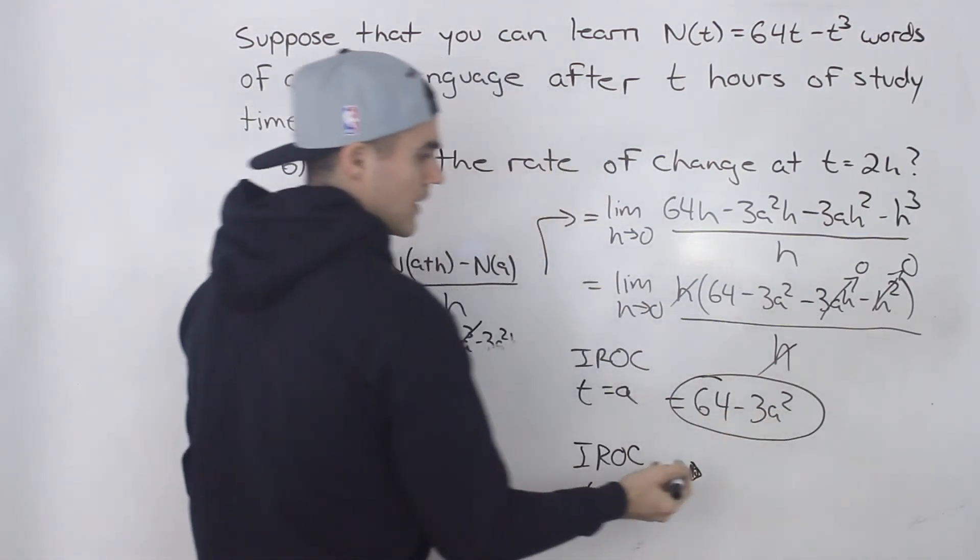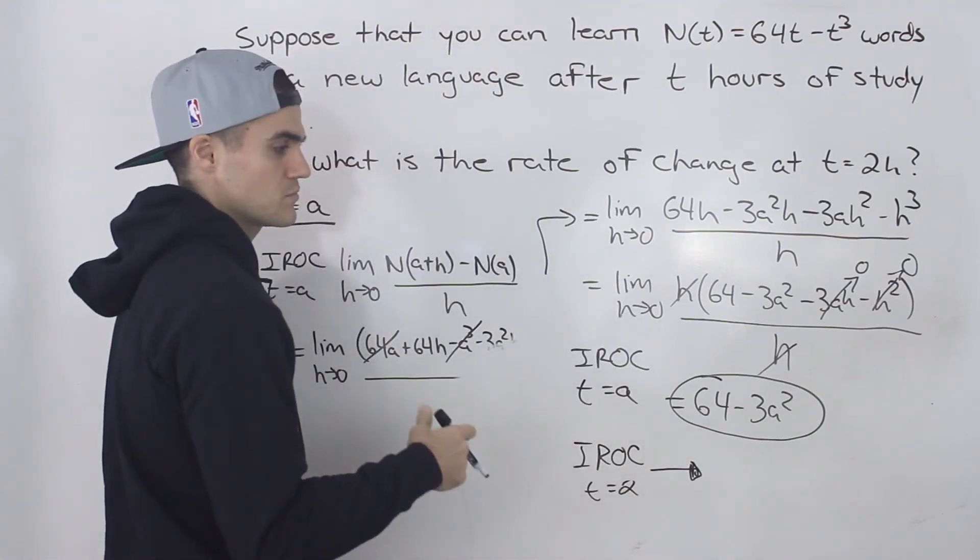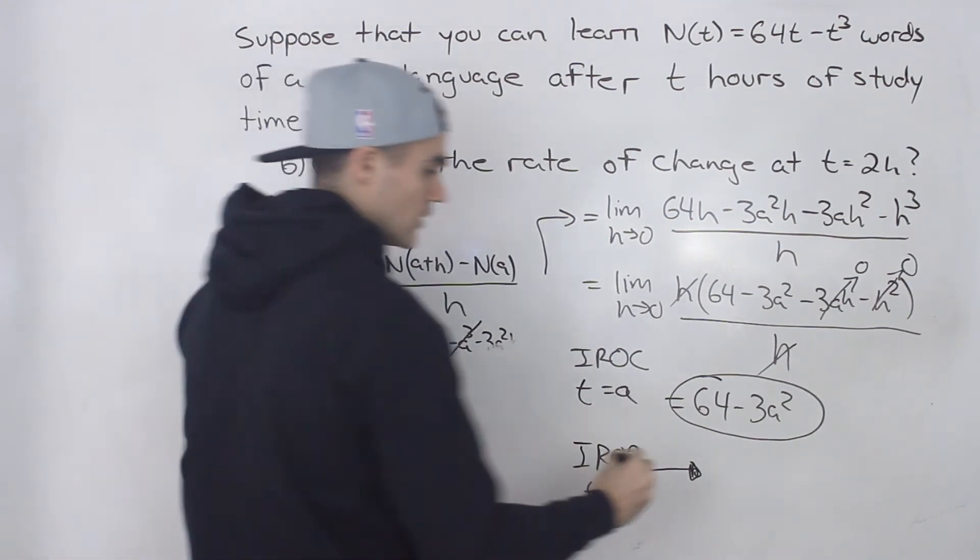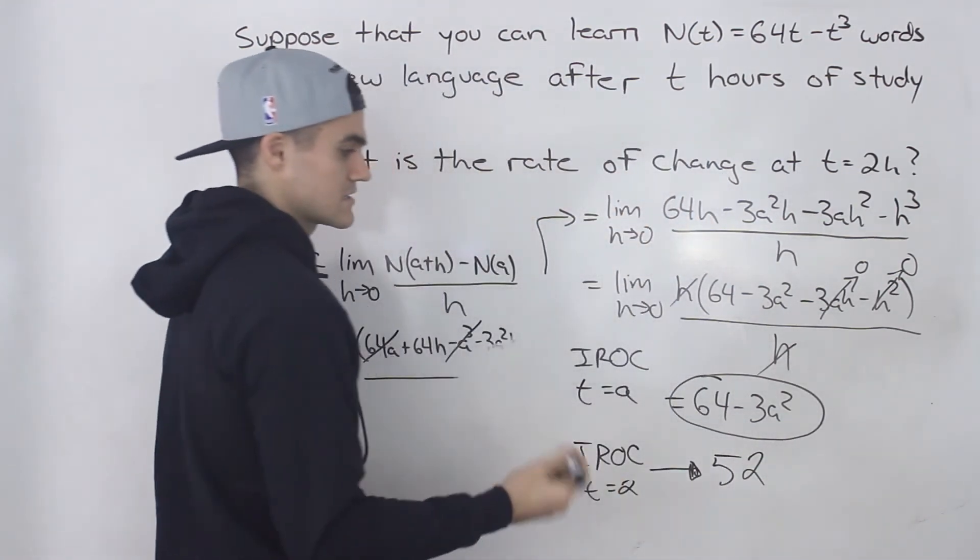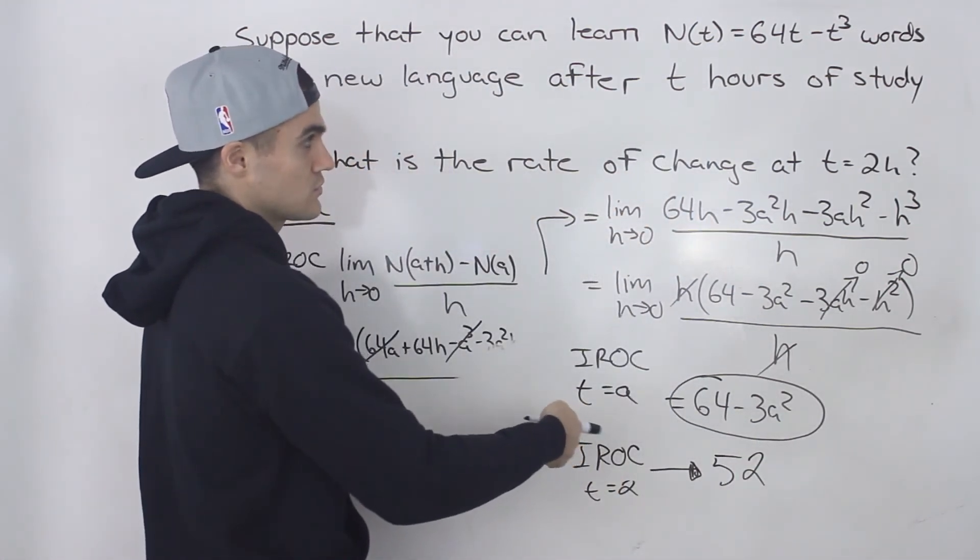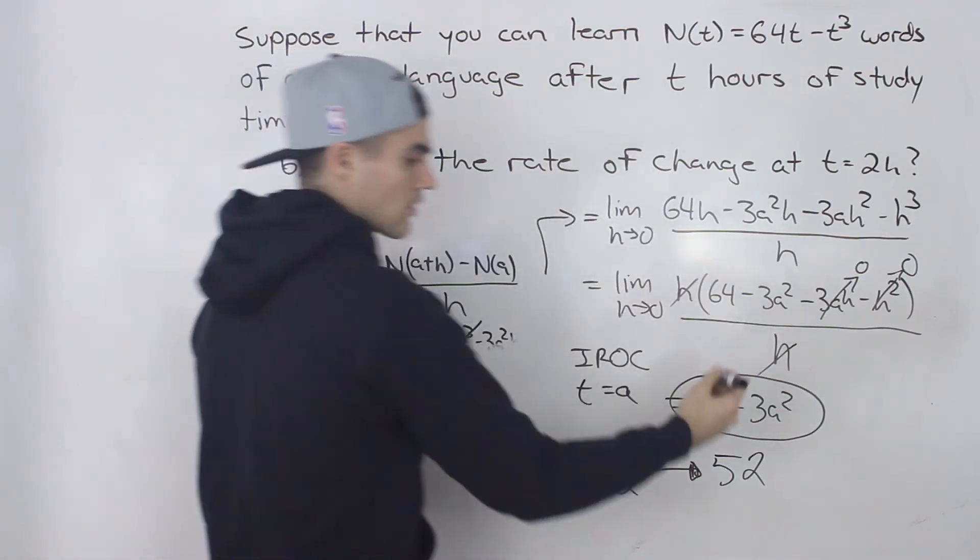we would have 64 minus 3 times 2 squared, which would be 64 minus 12, which would give us 52. And because this is rate of change, this 52 is words per hour.